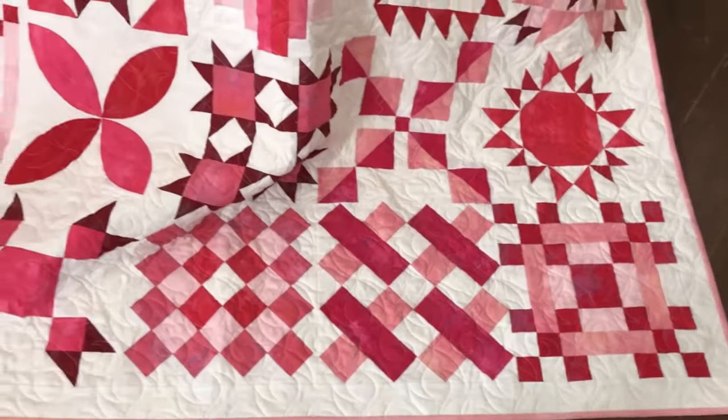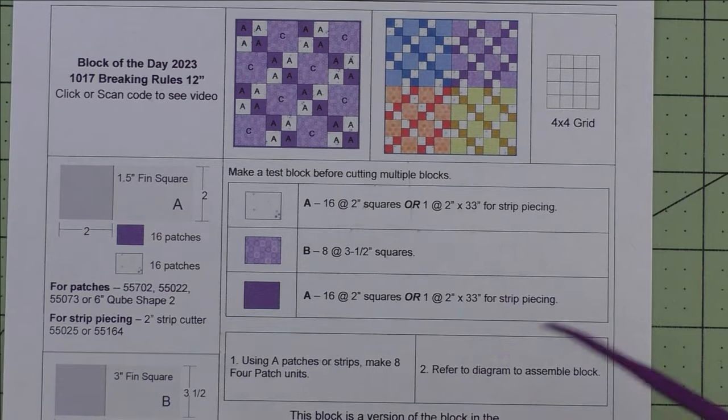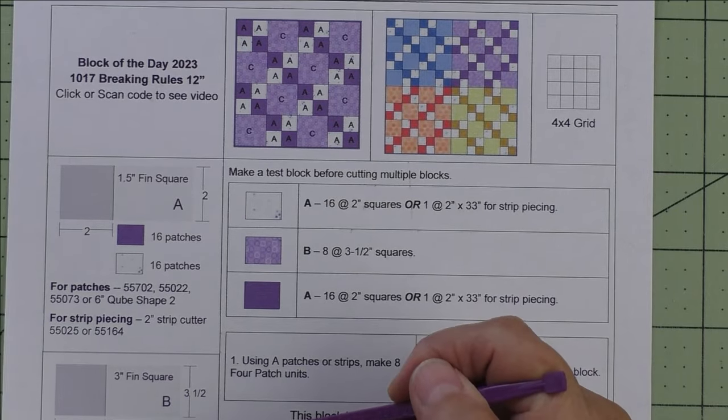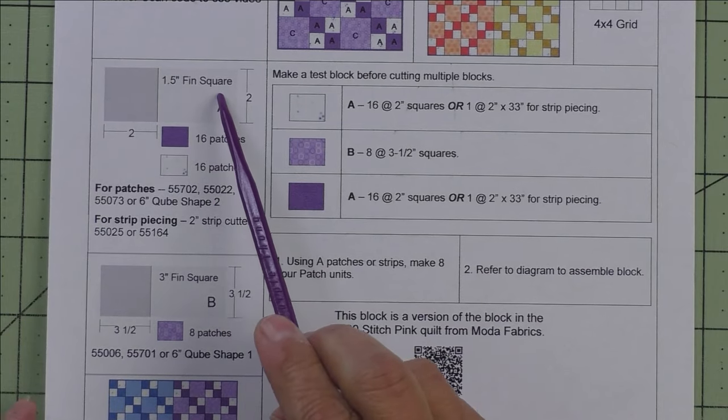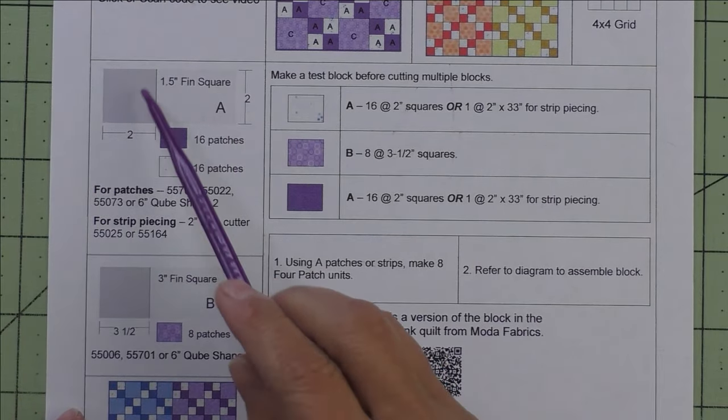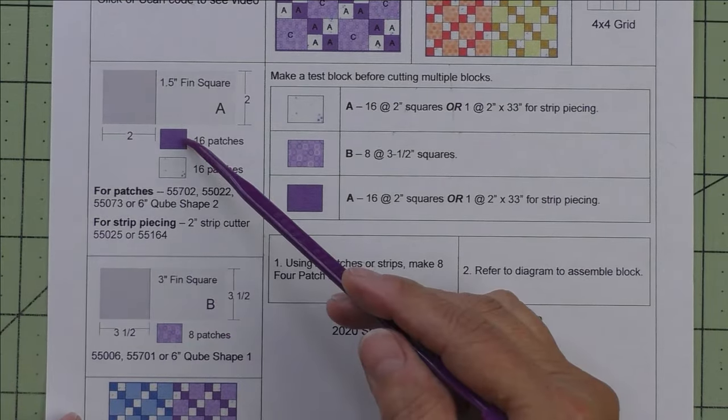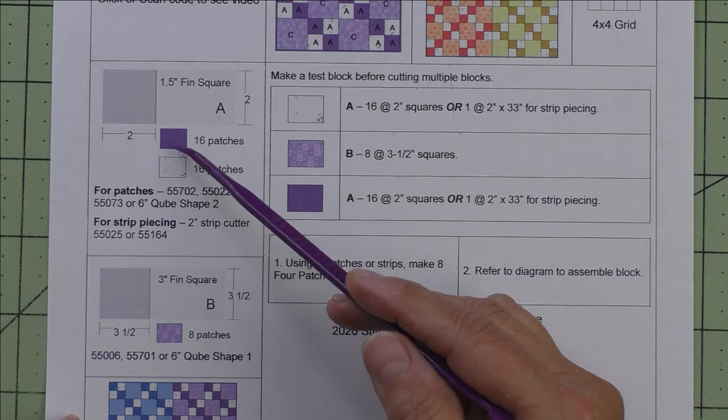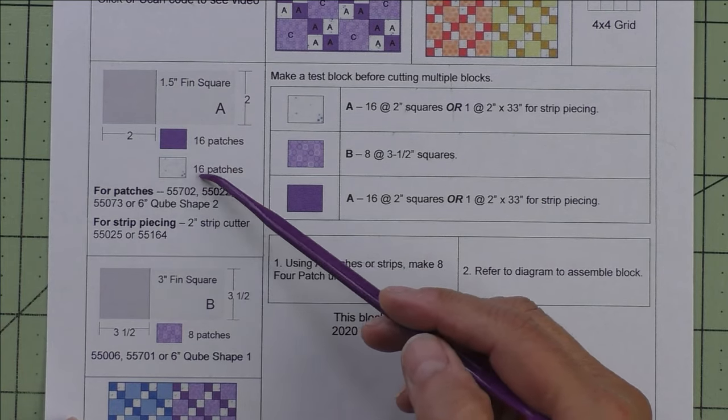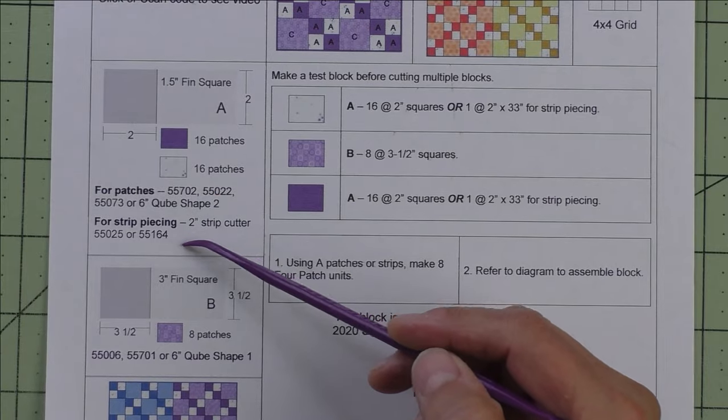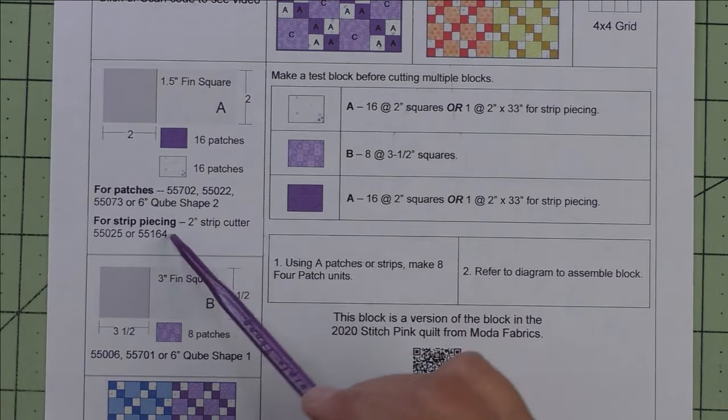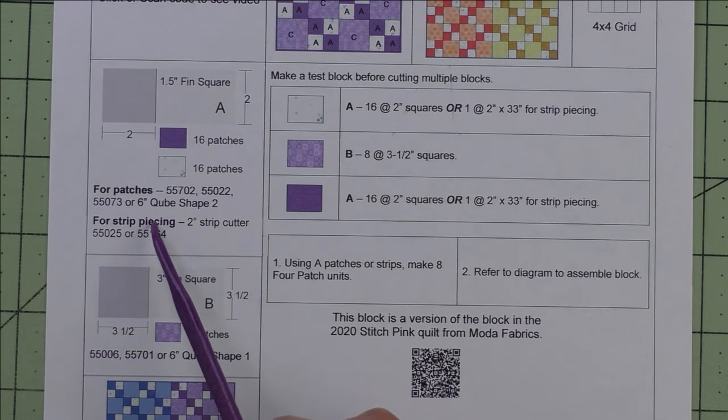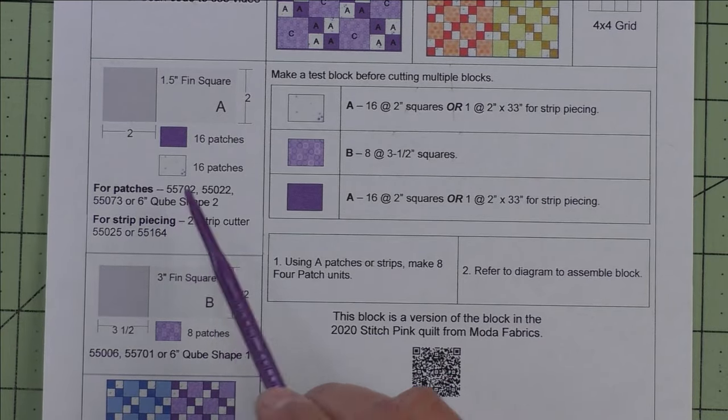Let's go to the block. We only have two patches and they're both squares. Patch A is a one and a half inch finished square. We cut two inch squares and we'll need 16 patches each of the light and the dark fabric. Here are the AccuQuilt dies that will cut this. You can either cut patches or you can do strip piecing, and we're going to do strip piecing in this demo.